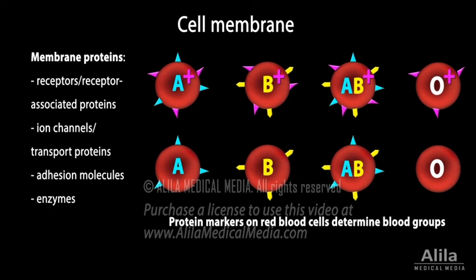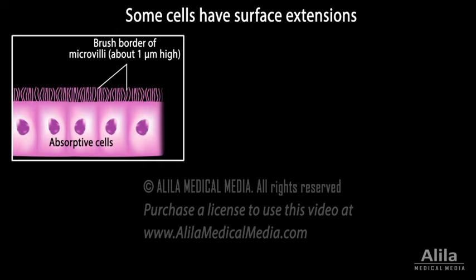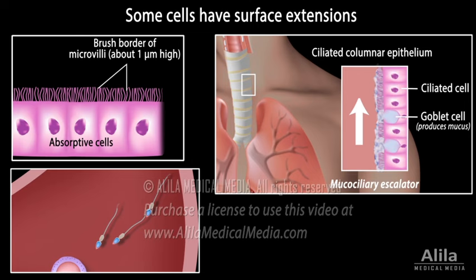Transmembrane glycoproteins also serve as surface antigens, determining the cell's identity. On top of the cell membrane, some cells have surface extensions that carry out specialized functions. Examples include microvilli that increase the surface area in the small intestine, cilia that move mucus in the respiratory tract, and flagella that are responsible for the movements of sperm cells.